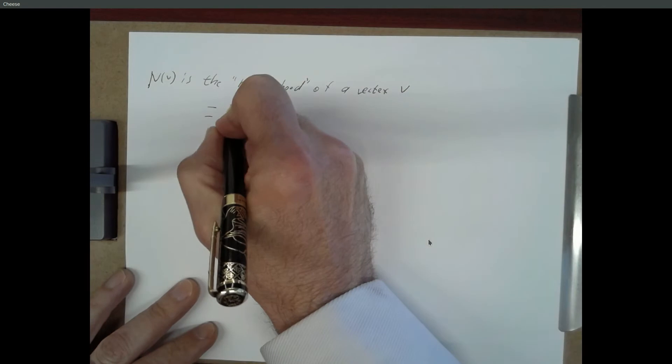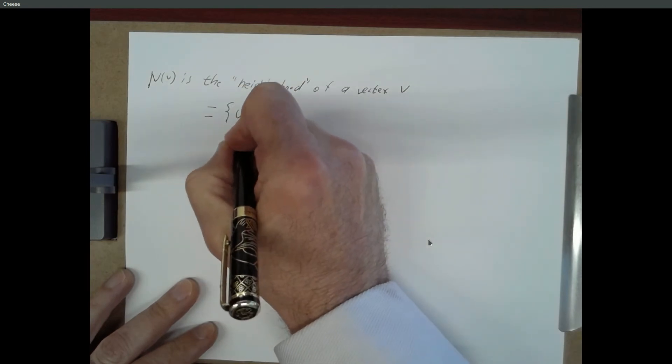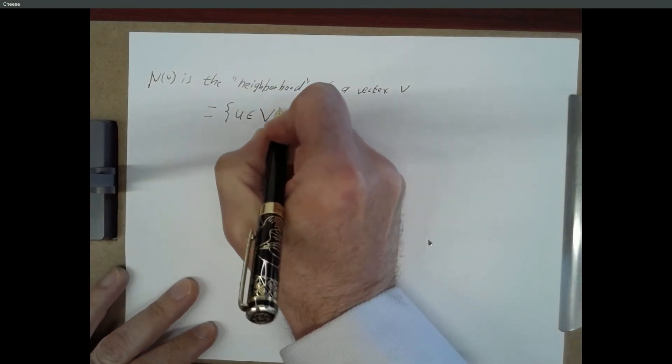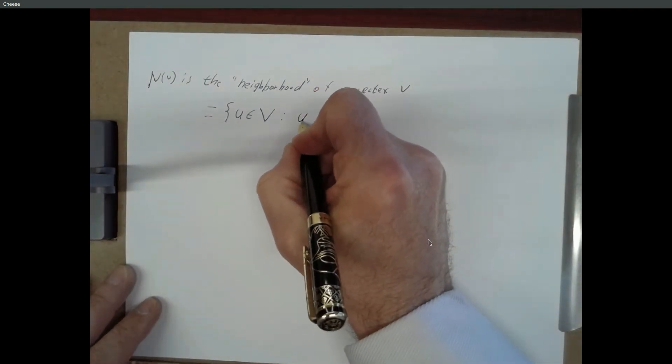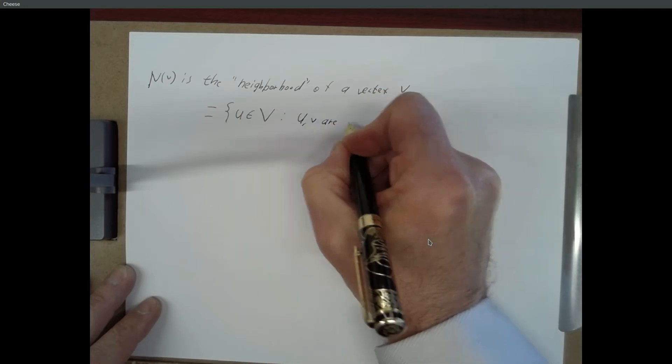N of V equals the set of all other vertices U such that U and V are connected.